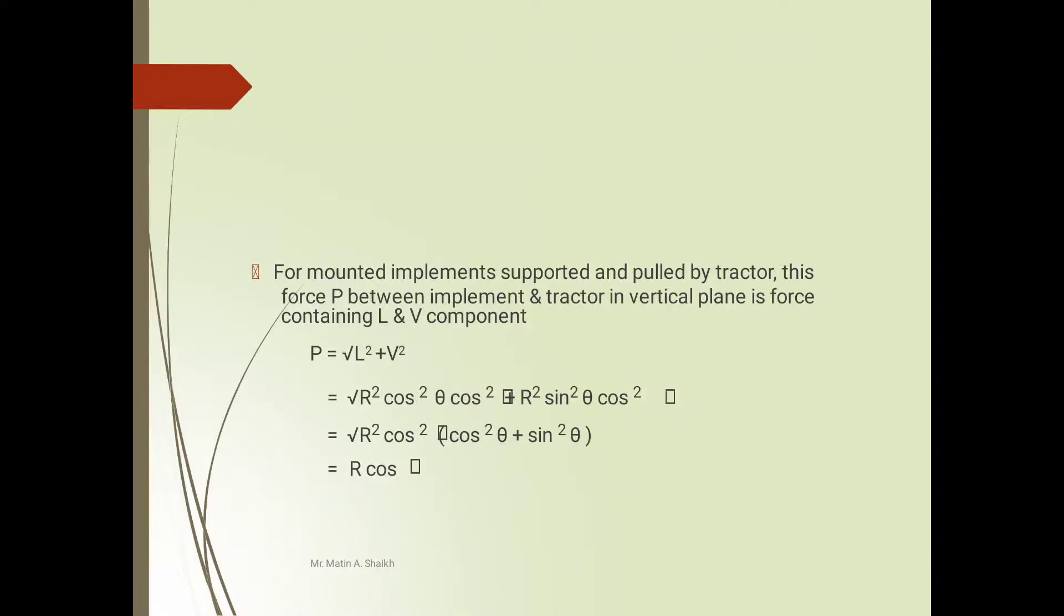For mounted implements supported and pulled by tractor, this force P between implement and tractor in vertical plane is force containing L, the horizontal force, and V, the vertical component. P is equal to square root of L square plus V square. See here, I will show you how this equation will be modified. In the previous slide we have seen the value of L, that is R cos θ cos φ. Put this value in the equation: P equals square root of L square plus V square.